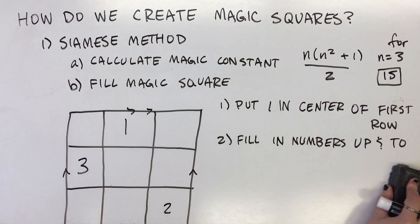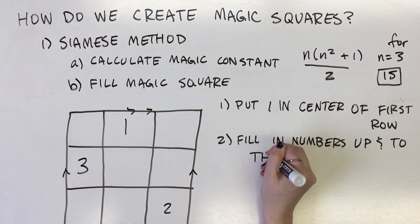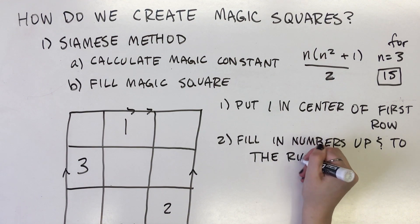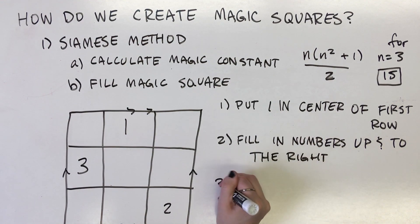First, if the movement takes you to a box above the magic square's top row, remain in that box's column, but place the number in the bottom row of that column.